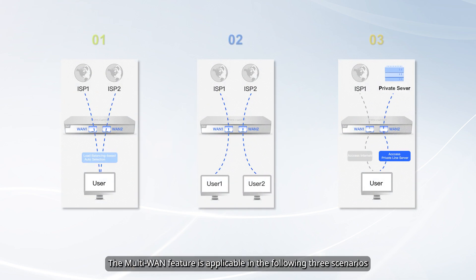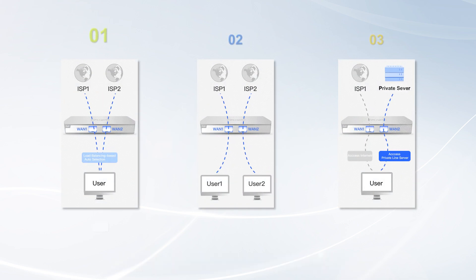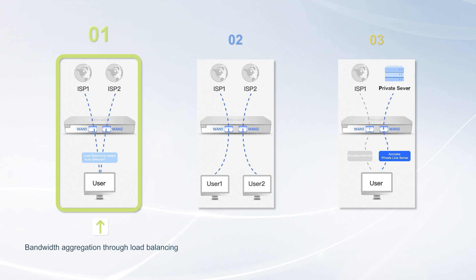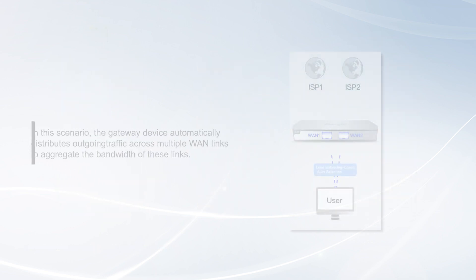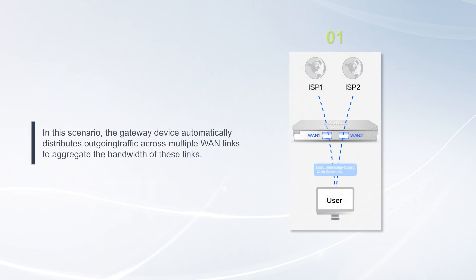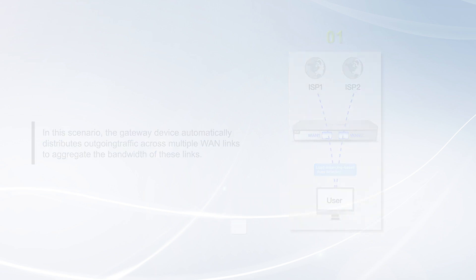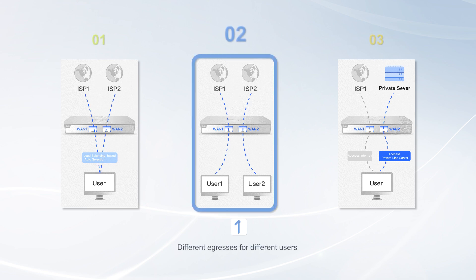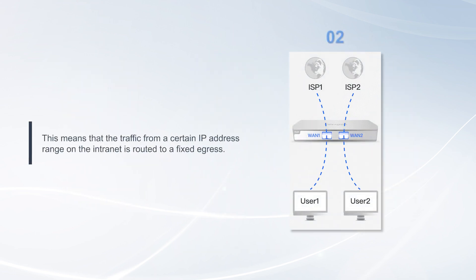The multi-WAN feature is applicable in the following three scenarios. First, bandwidth aggregation through load balancing. In this scenario, the gateway device automatically distributes outgoing traffic across multiple WAN links to aggregate the bandwidth of these links. Second, different egresses for different users, meaning that traffic from a certain IP address range on the internet is routed to a fixed egress.